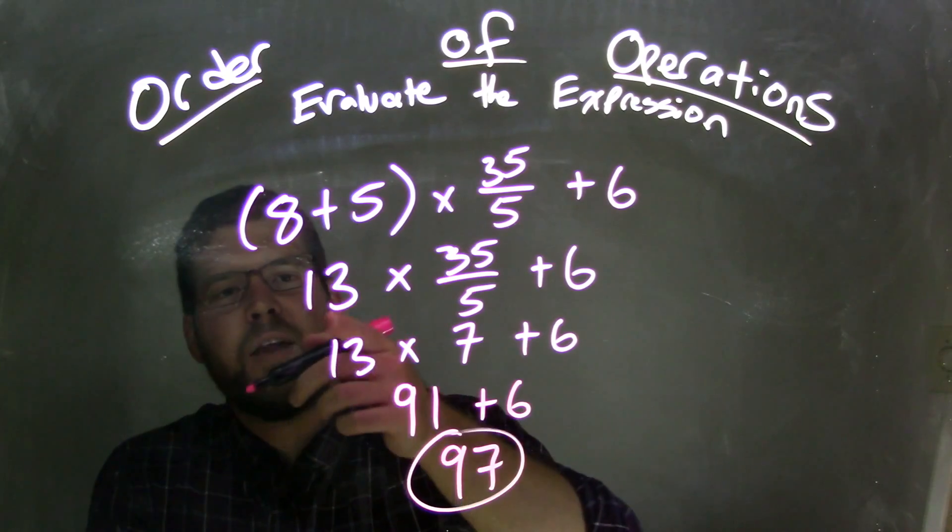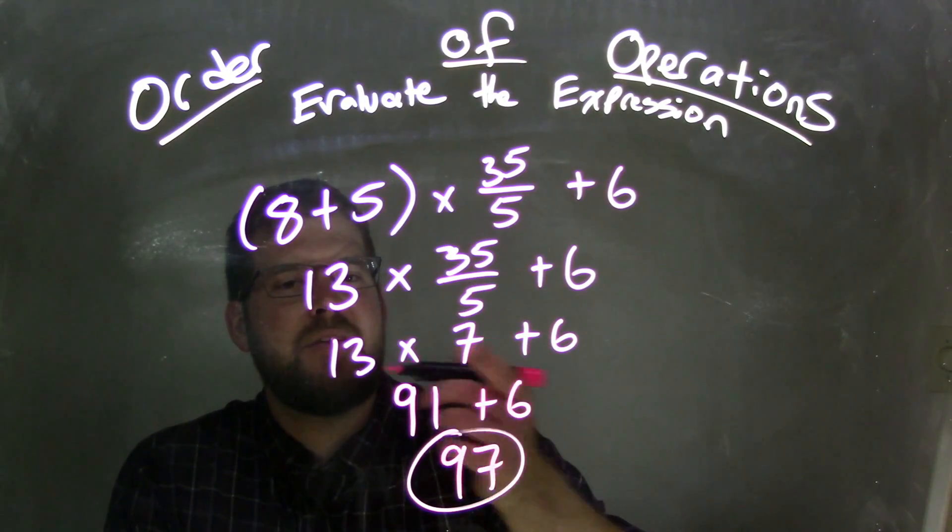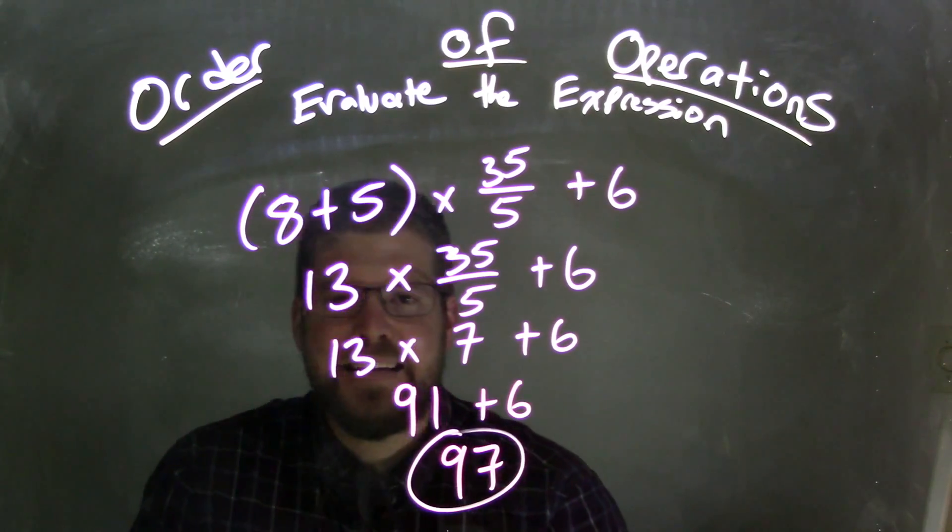So at first, we dealt with parentheses. We've got 13. 35 divided by 5 comes out to be 7. 7 times 13 is 91. Add the 6, 97. And that is our final answer.